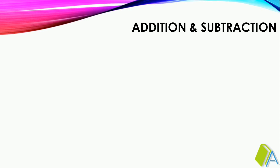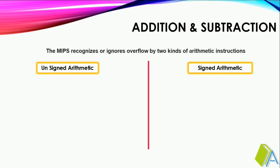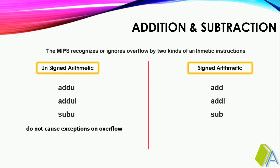We will also be discussing conditions for overflow and no overflow during addition and subtraction. Unsigned integers are commonly used for memory addresses where overflows are ignored. The MIPS architecture recognizes or ignores overflow by two kinds of arithmetic instructions: unsigned arithmetic and signed arithmetic. In unsigned arithmetic, add unsigned, add immediate unsigned, and subtract unsigned do not cause any exceptions or overflow. But in signed arithmetic, add, add immediate, and subtract do cause exceptions or overflow.